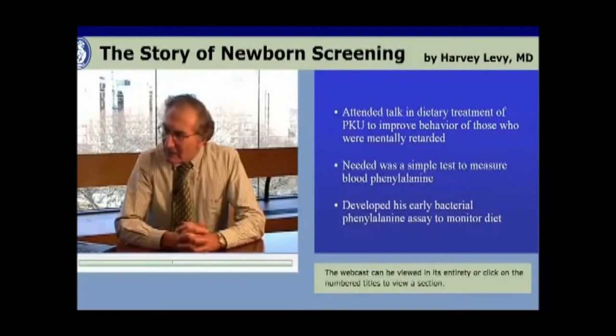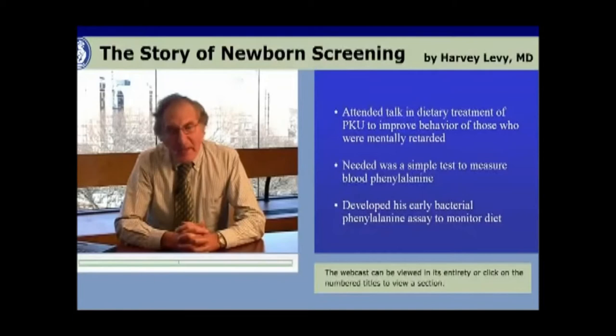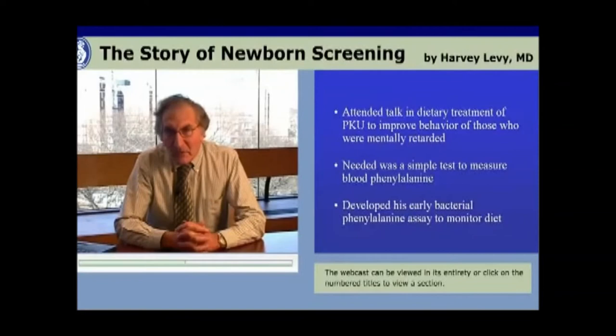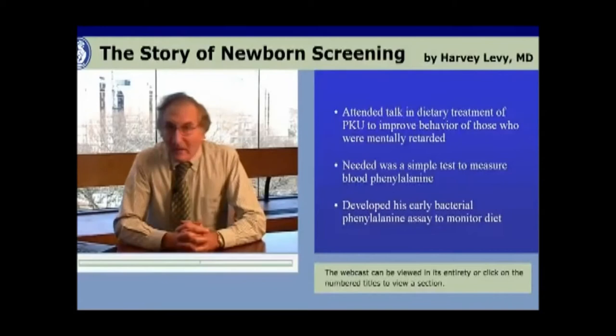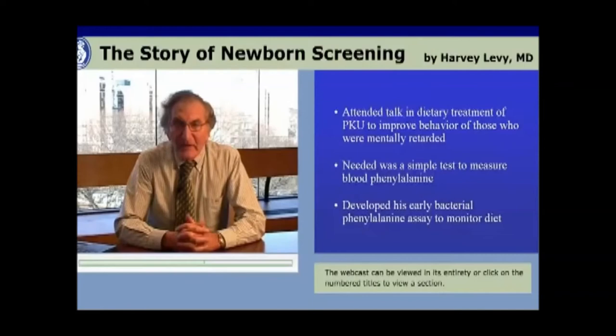Dr. Warner told them three things: he did have a diet for PKU which improved the behavior of those who were mentally retarded from PKU; that what was needed was to measure the blood phenylalanine level in order to properly monitor the diet; and finally, that the problem in monitoring the diet was that there was no simple blood phenylalanine assay — the assays available were very complicated, labor-intensive tube dilutional assays that made it very difficult to treat individuals with PKU.